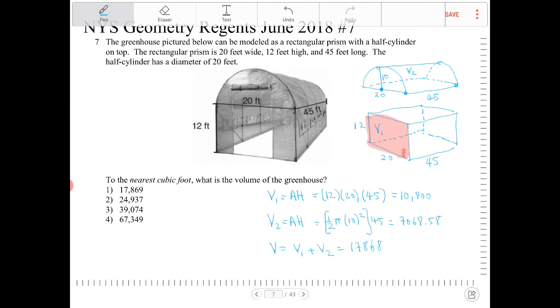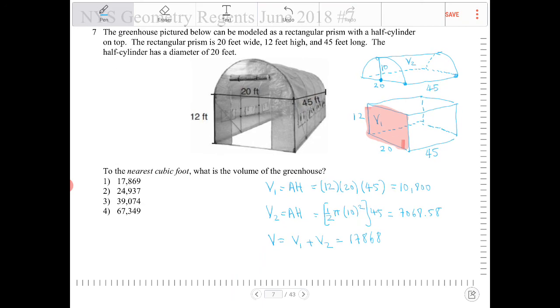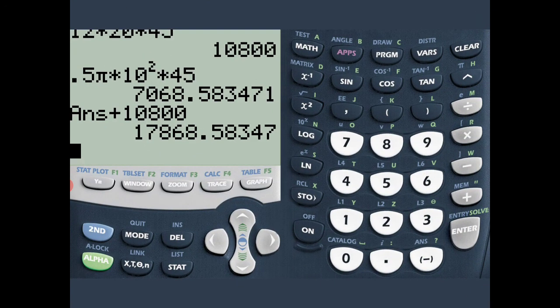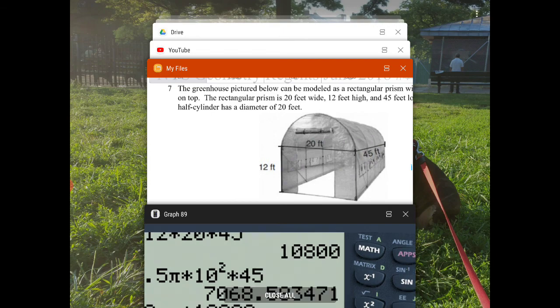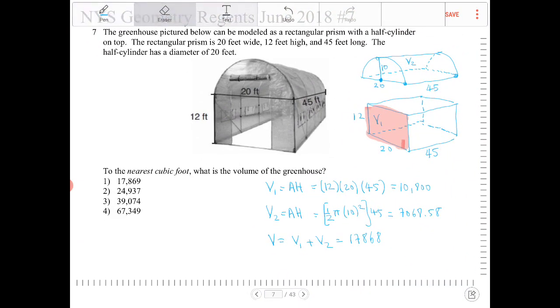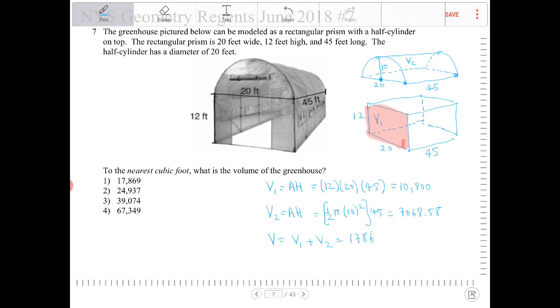It says to round to the nearest cubic foot, so that should be 17,869, because of the 0.58 there. This answer here is option one.